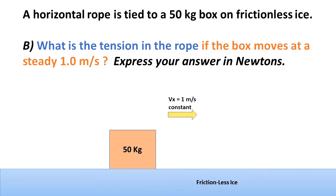Now let's analyze Case B: What is the tension in the rope if the box moves at a steady one meter per second? Express your answer in Newtons. As you can see, I denoted the constant velocity to the right with a yellow arrow. From the previous analysis, the summation of the forces in the y direction add up to zero.